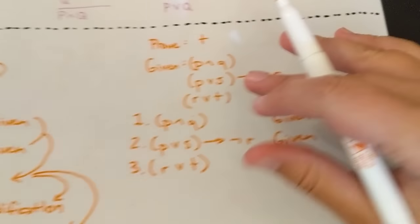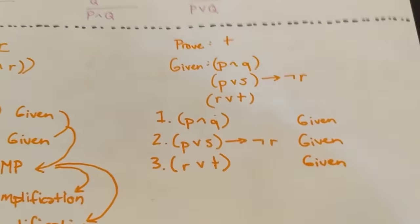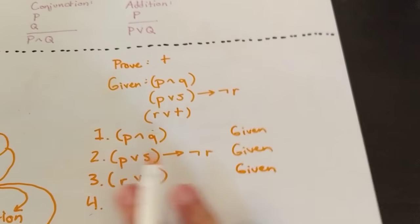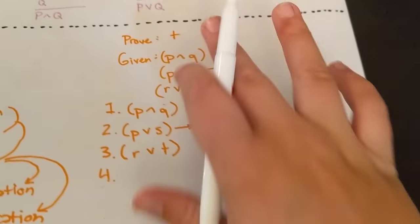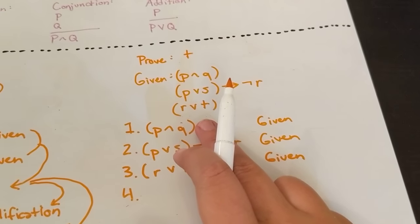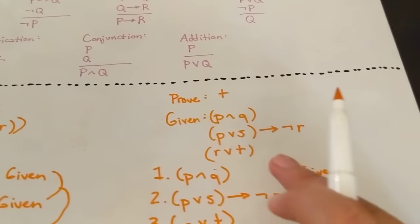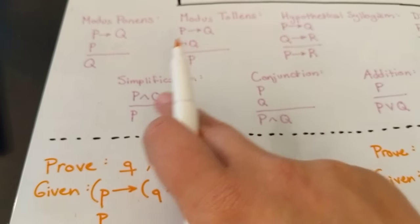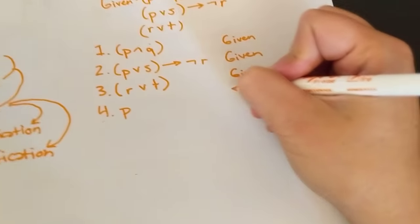All right, so our first step, which is step number four, so our first step is to write out our givens, and then we want to start moving toward statements about T. So we're going to start with this one, and we have a lovely rule that says if we know that P and Q is true, then we know that, if we know that P and Q is true, then we know that P is true. So we're just going to do that, and we're going to say P is true using our simplification.